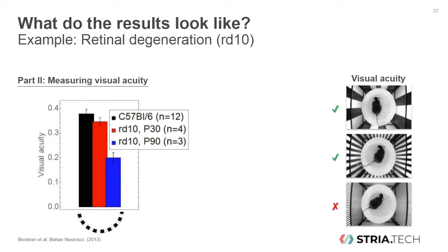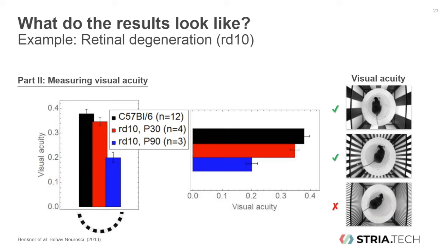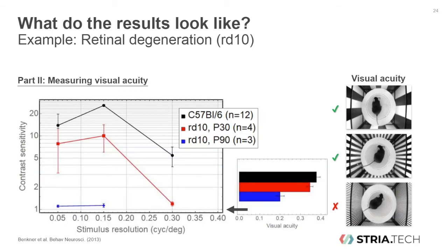This graph shows the visual acuity threshold for wild-type animals and young and old RD10 animals, confirming that the vision of RD10 animals is impaired. This is how results for visual acuity are often represented in the literature. Turning the graph 90 degrees, we can incorporate the visual acuity results into the previous graph showing contrast sensitivity, since acuity was measured at maximal contrast. This shows a rather complete contrast sensitivity function of wild-type and RD10 mice, demonstrating how visual impairment becomes worse with age.